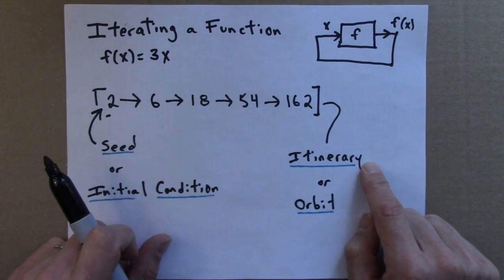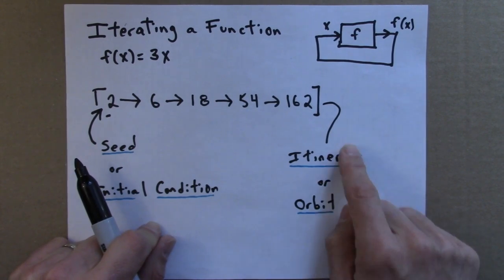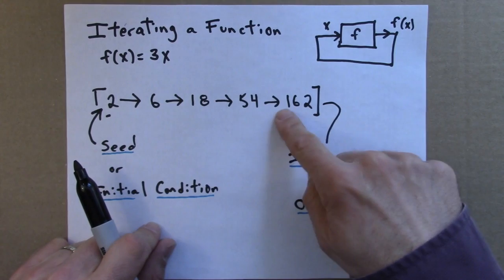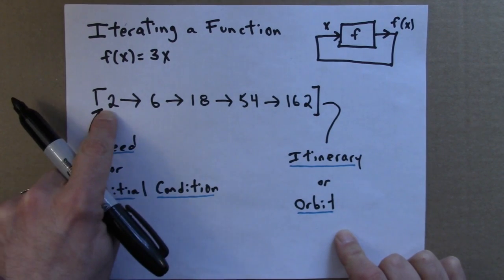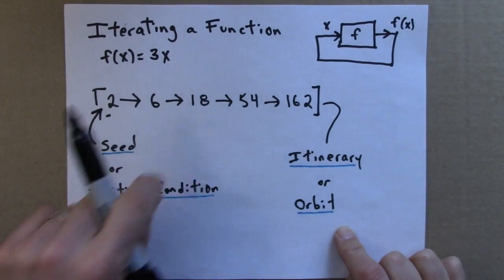An itinerary for a trip is just a list of all the places you visit in order. So it makes sense that this would be called an itinerary. It's a list of all the places a number visits, as it's iterated, in the order in which it visits them.